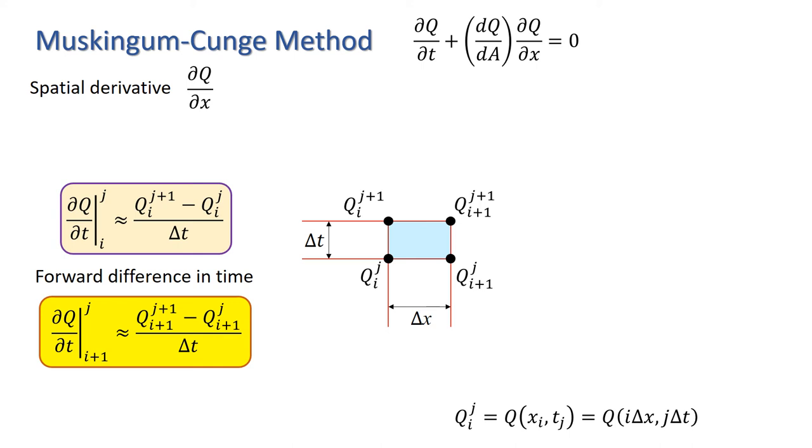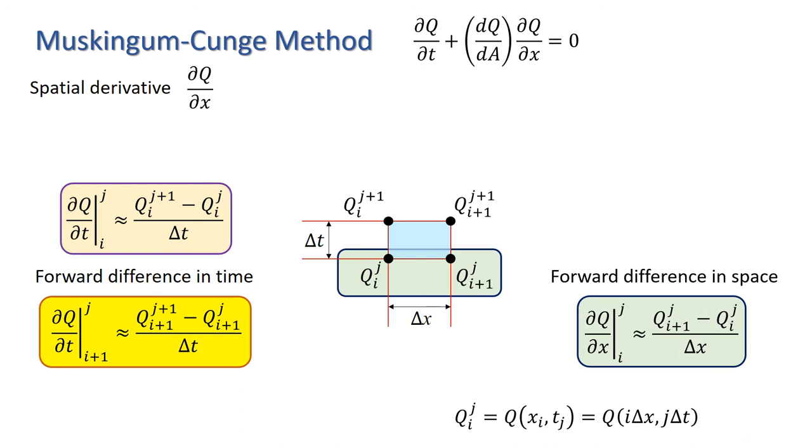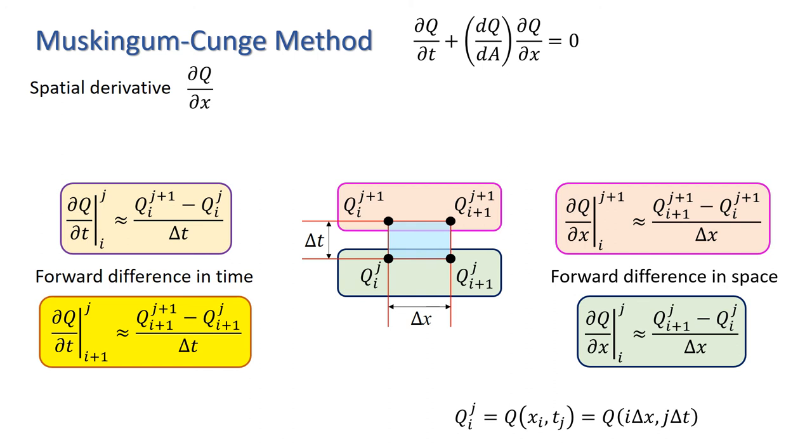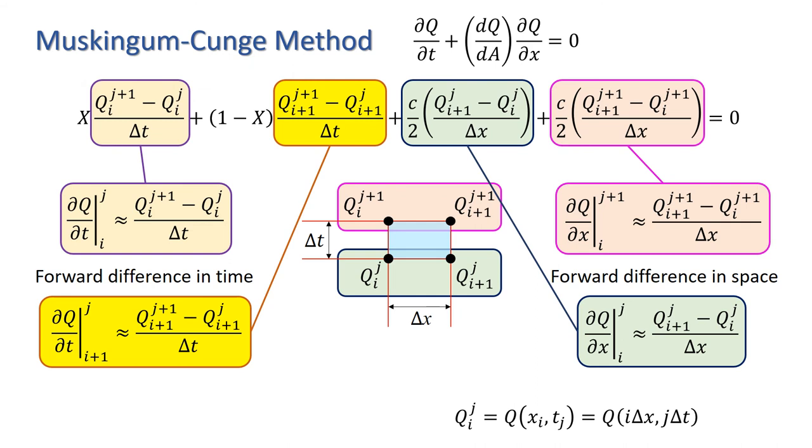Similarly, for the space derivative, we will use a forward difference approximation, which we could evaluate at time step j, giving us this approximation, or time step j plus 1, giving us this approximation. We now have all the approximations we need for a numerical scheme, which uses values of the discharge at all four corners of our computational cell.